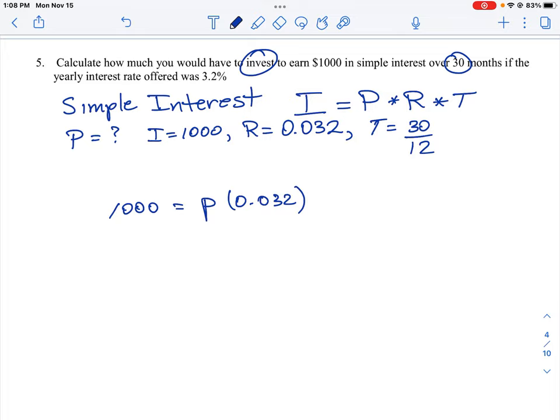And then the time, which I'm not even going to convert at this point, I'm just going to leave it as 30 over 12. So this is what we get when we substitute our numbers into the equation.